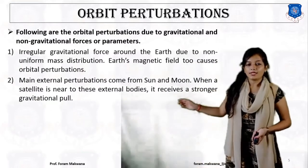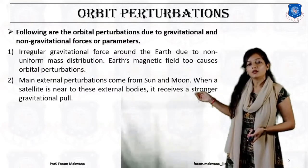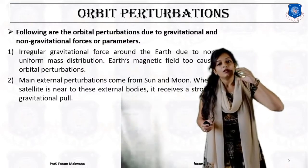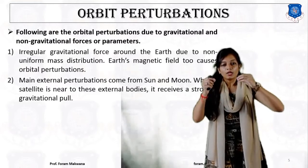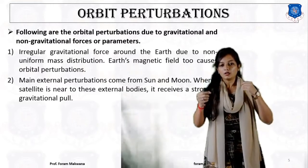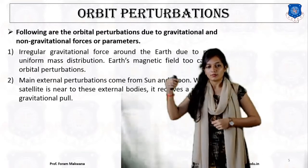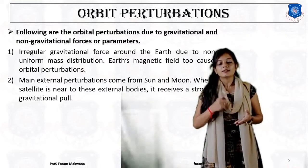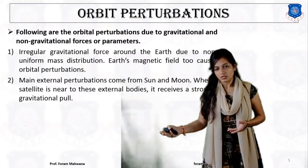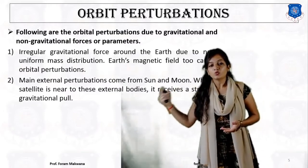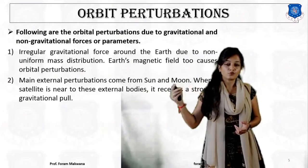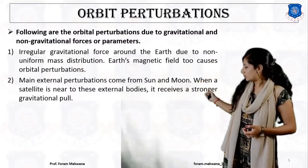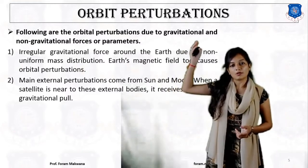The second cause: the main external perturbation comes from the sun and the moon. The satellite is moving around the earth, the earth is moving around the sun, and the moon is also moving around the earth. The gravitational forces of both the sun and moon must be taken into consideration, as the stronger gravitational pull causes orbital perturbation.